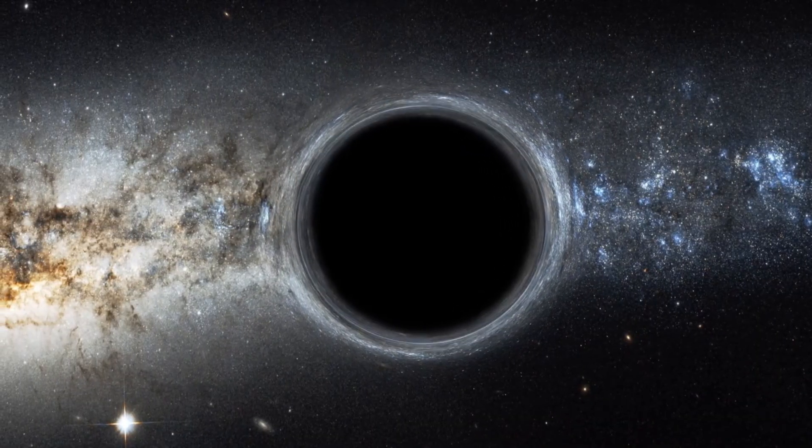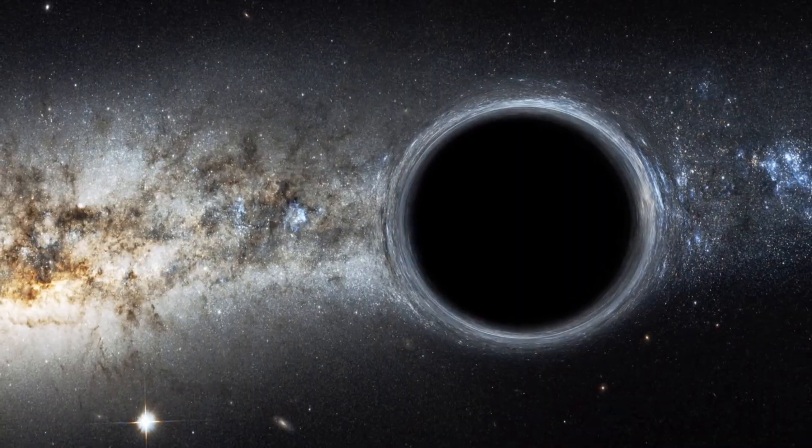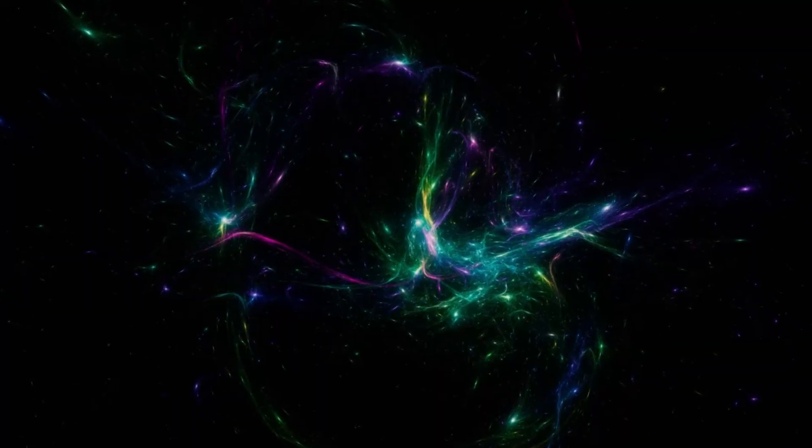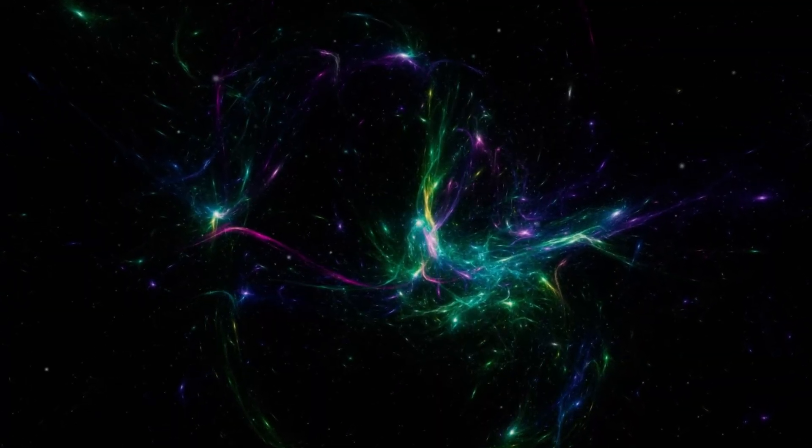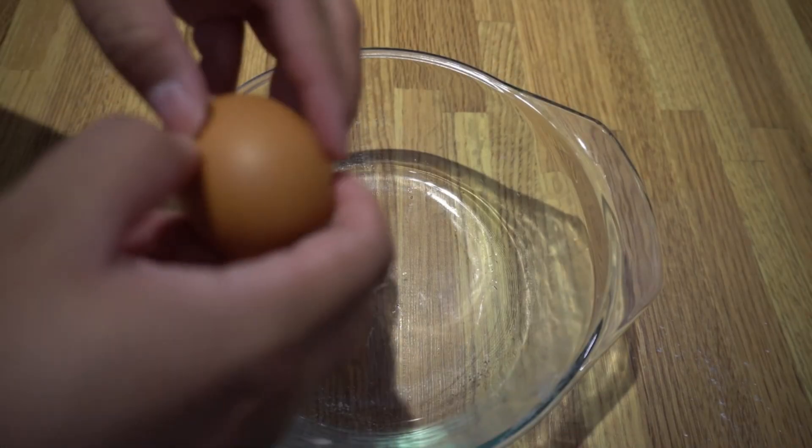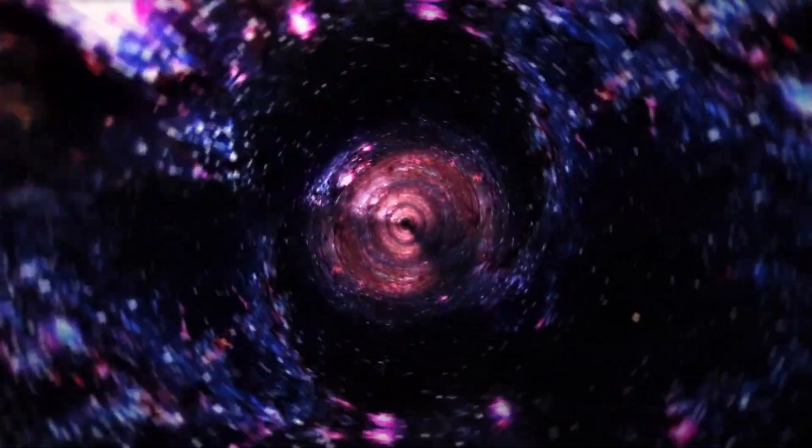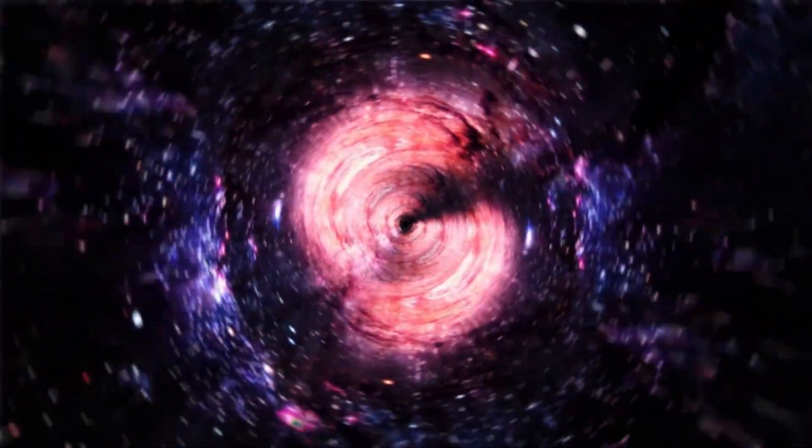For a black hole the size of the one in GNZ-11, the Eddington Limit suggests it should be able to swallow about the mass of the sun every few decades. But the data from Webb indicates this black hole is devouring material at a rate about five times higher than that limit would allow. That's not just fast, it's absurd according to the laws of physics as we know them. It's as if you watched someone empty an entire swimming pool into a teacup without spilling a drop.